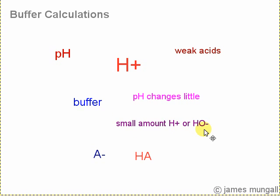pH will change a little when you add a little bit of H-plus or HO-minus, and we can think of this being a buffer solution made from a weak acid and a salt.